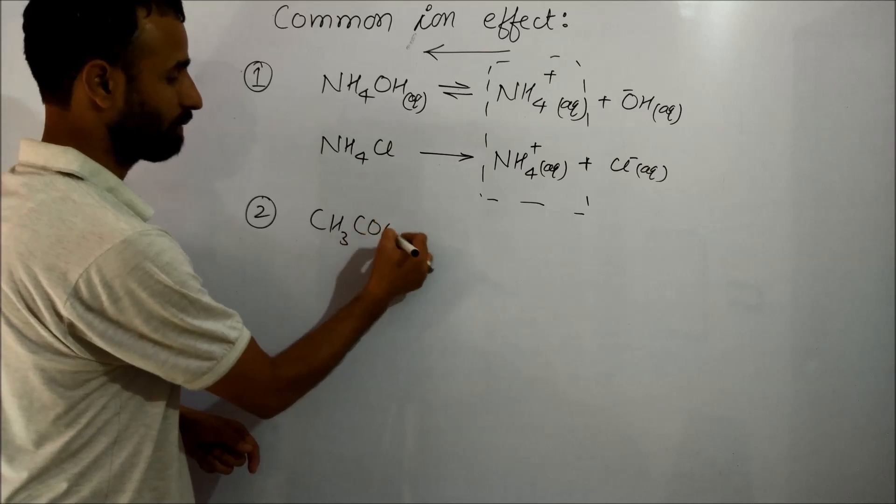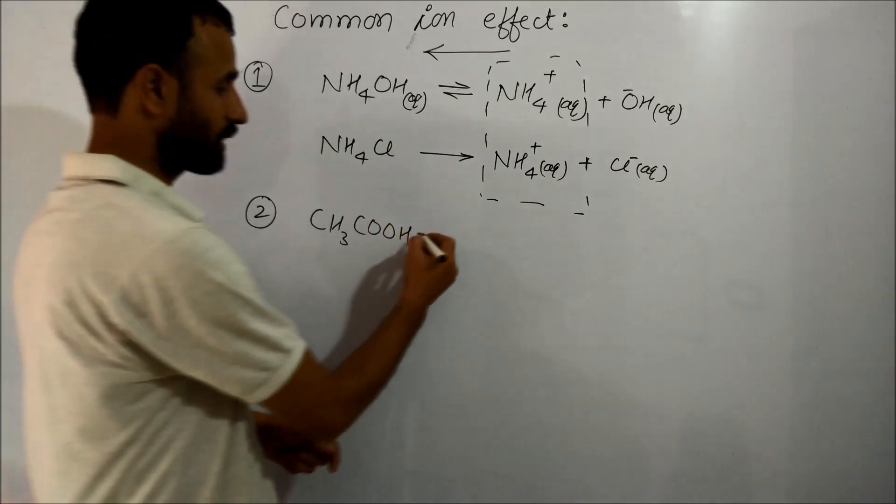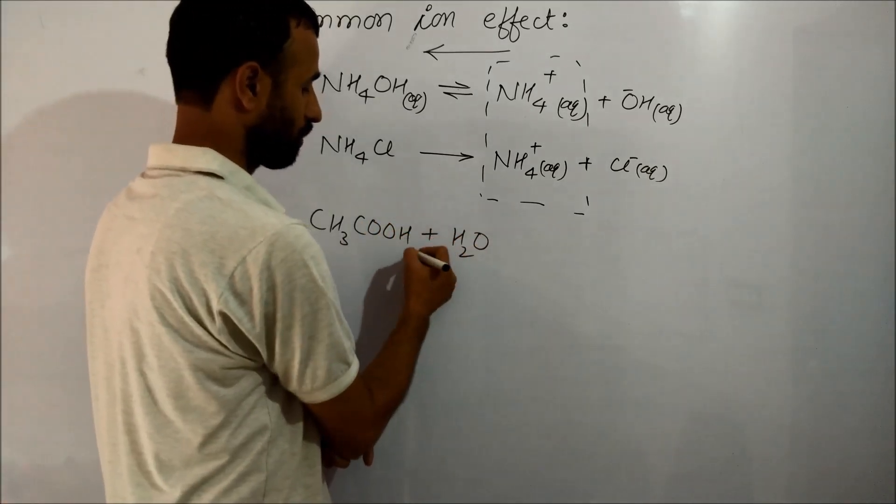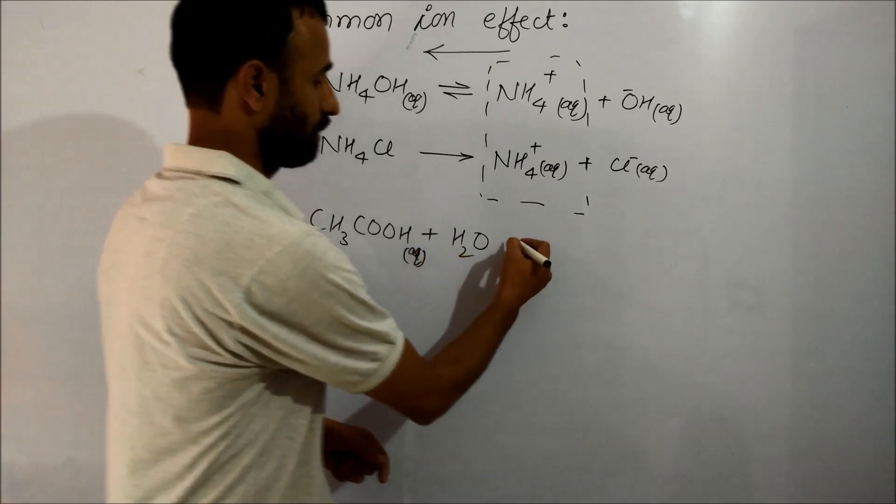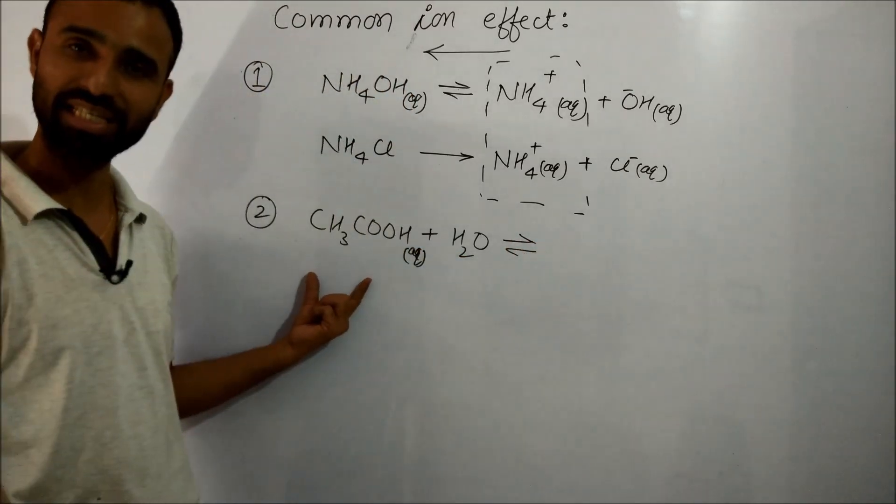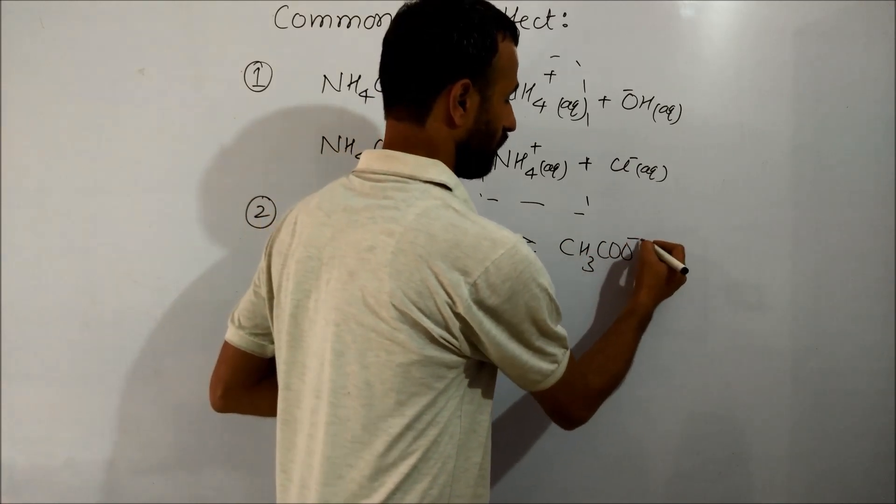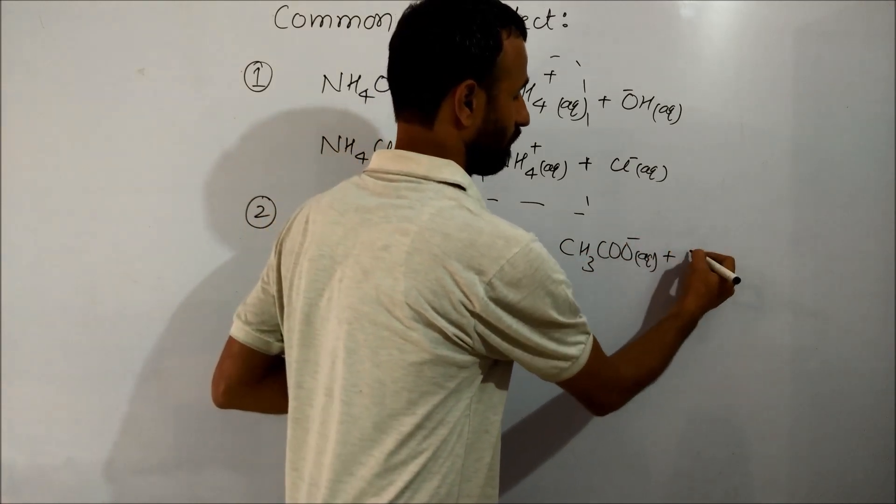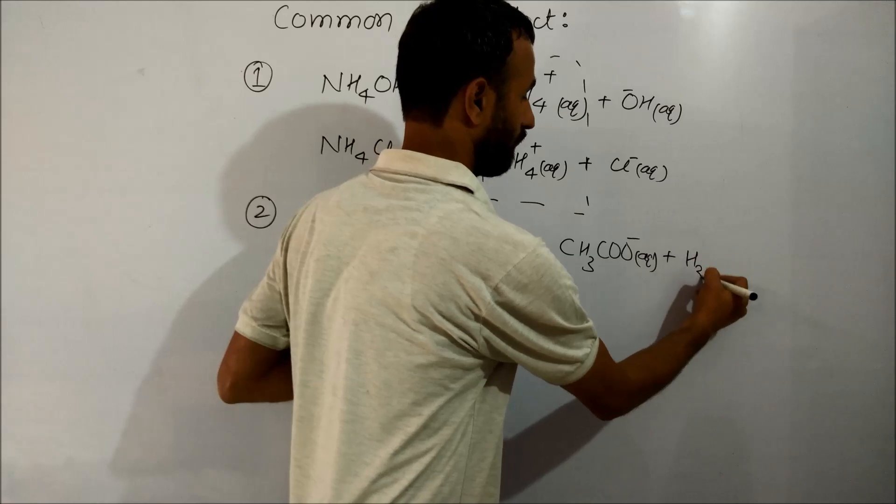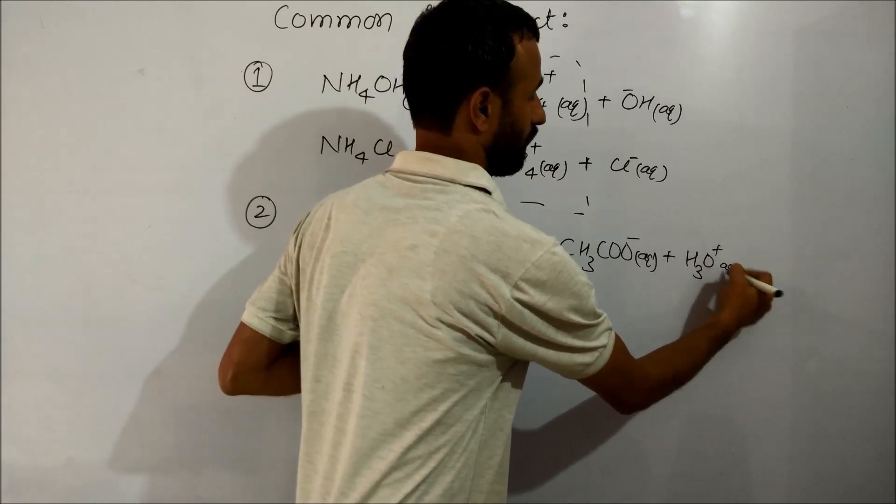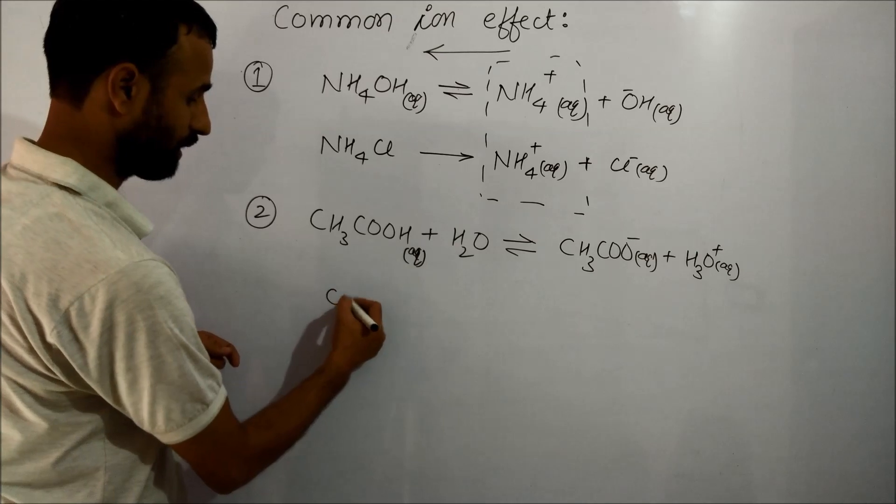Another example: we have acetic acid. Acetic acid when dissolved in water, because it is a weak acid, it is in equilibrium with acetate ion and H3O+ ion.